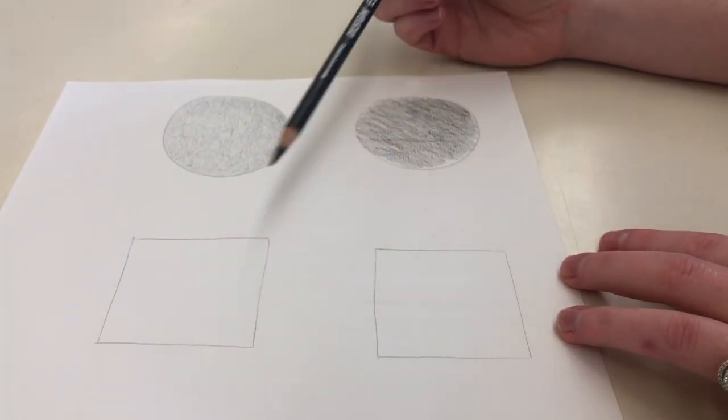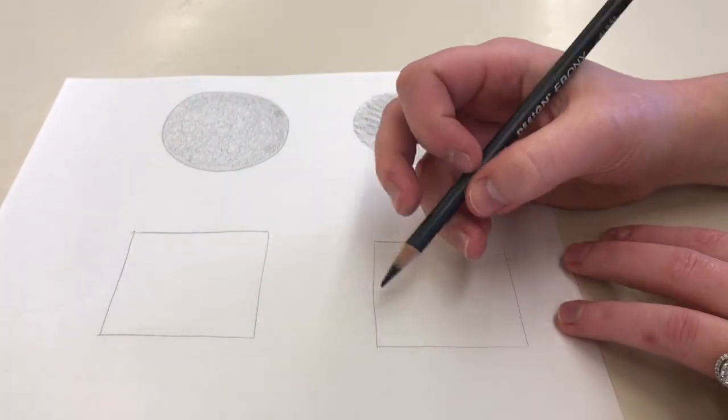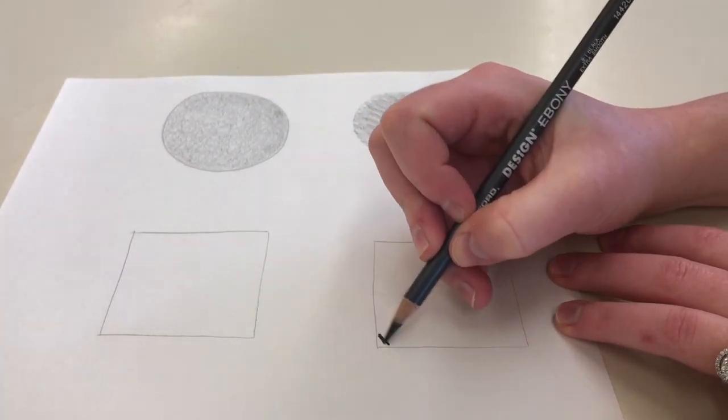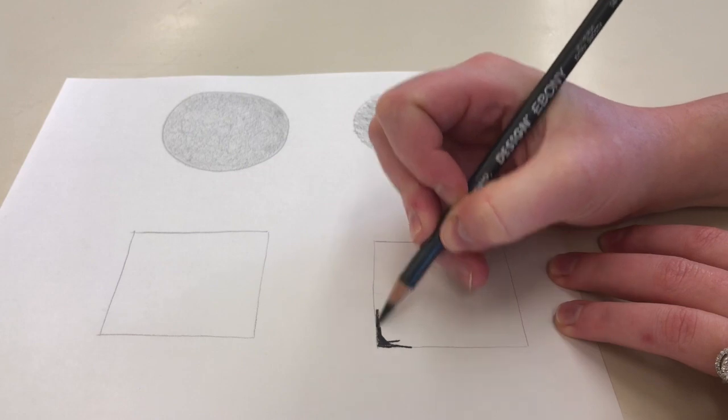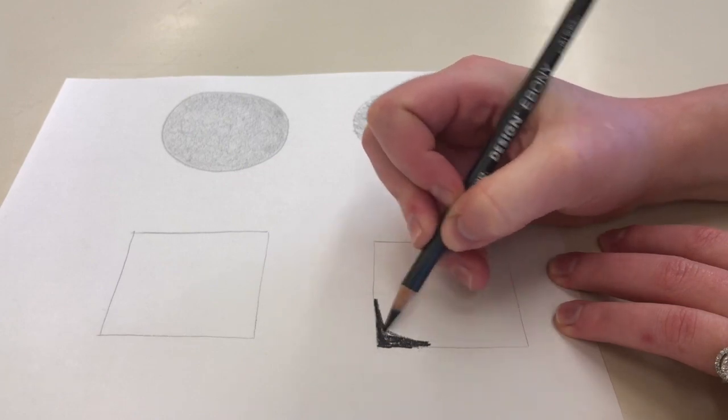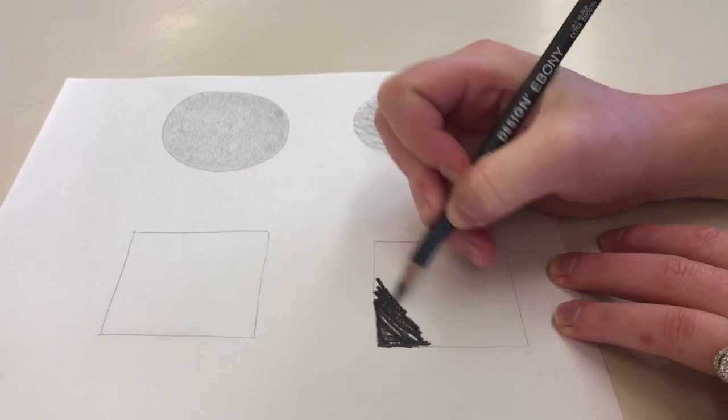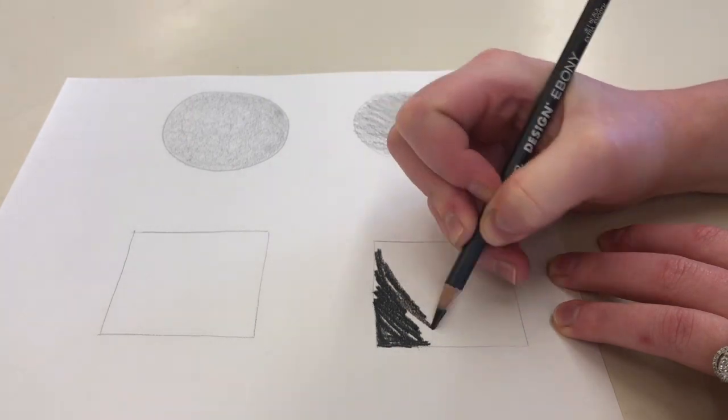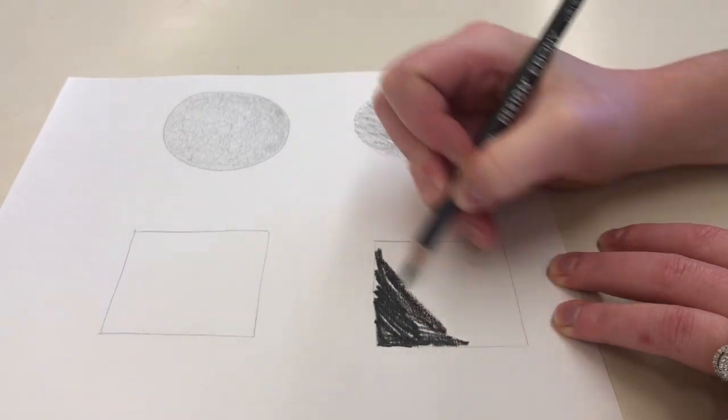In the bottom box you're seeing that I'm holding the pencil really tight and close to the end of the pencil where the lead comes out and I can't really create a nice smooth transition from dark to light because of how I'm holding the pencil and also how I'm applying it with big streaks.